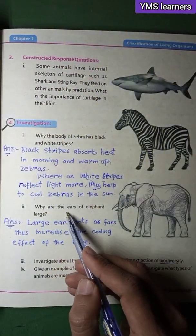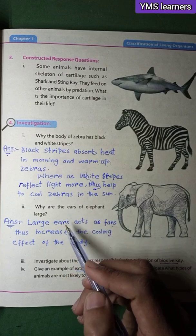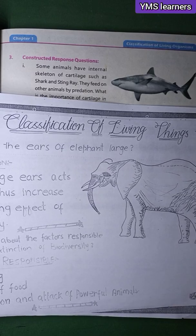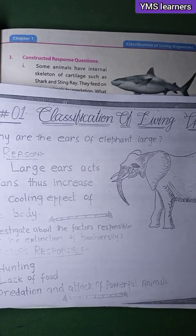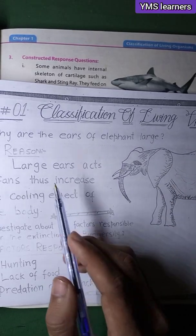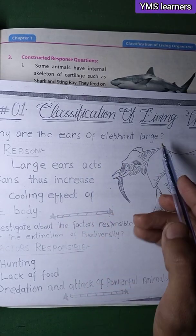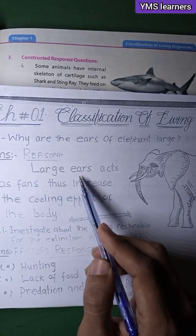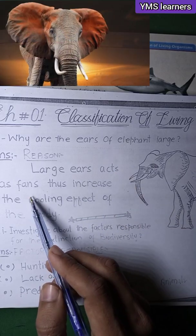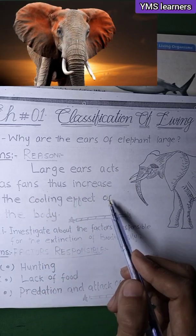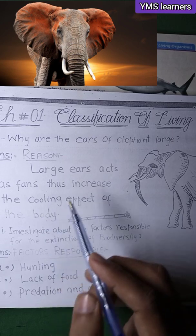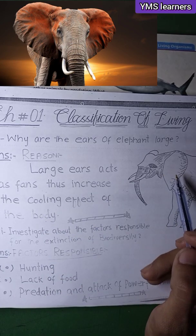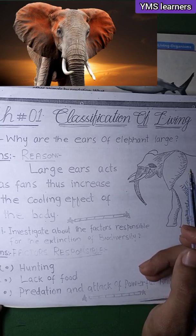Why are the ears of elephants large? The reason is that large ears act as fins, thus increasing the cooling effect of the body. Fins are used to increase surface area for cooling.